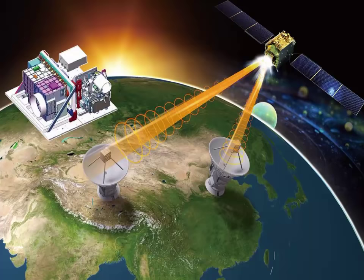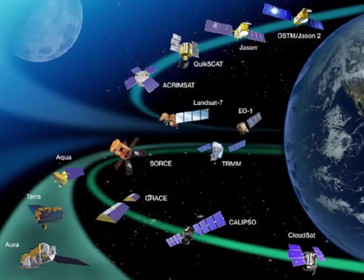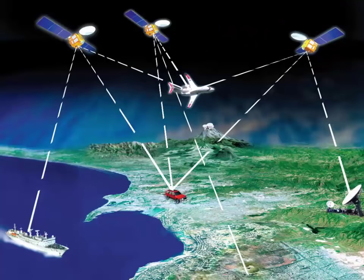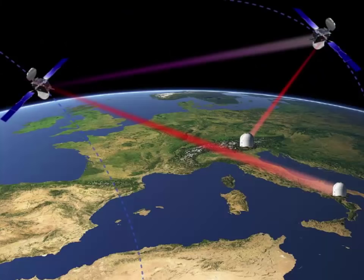Still other satellites are used mainly for communications, such as beaming TV signals and phone calls around the world. A group of more than 20 satellites makes up the Global Positioning System, or GPS. If you have a GPS receiver, these satellites can help figure out your exact location.